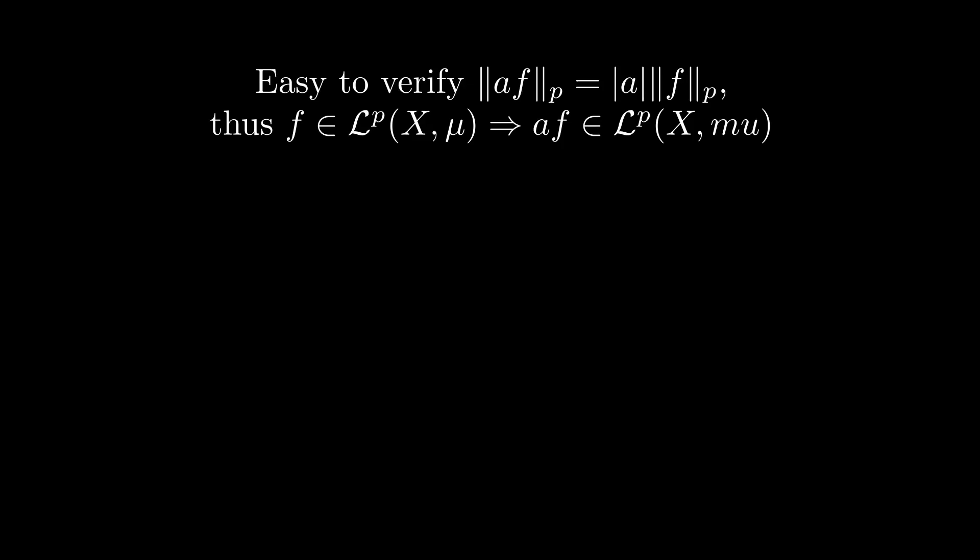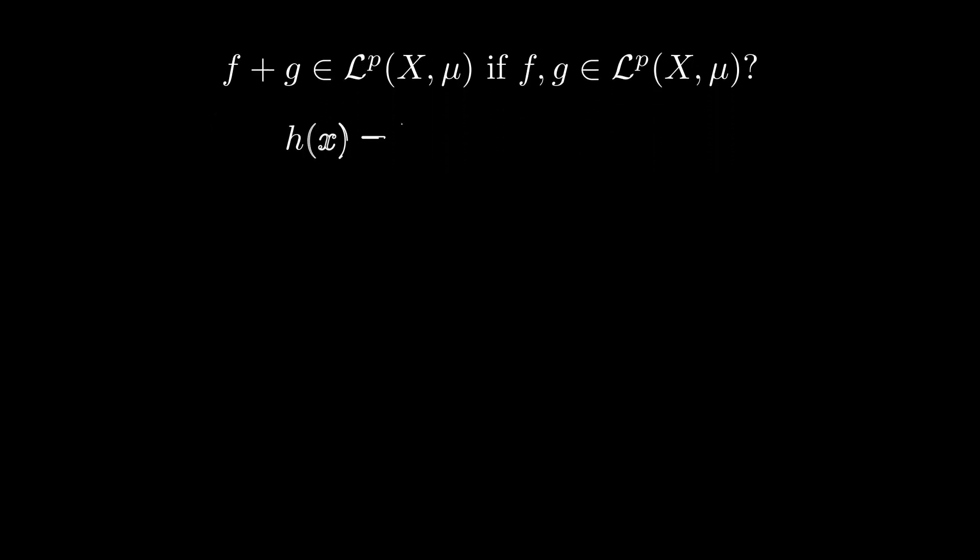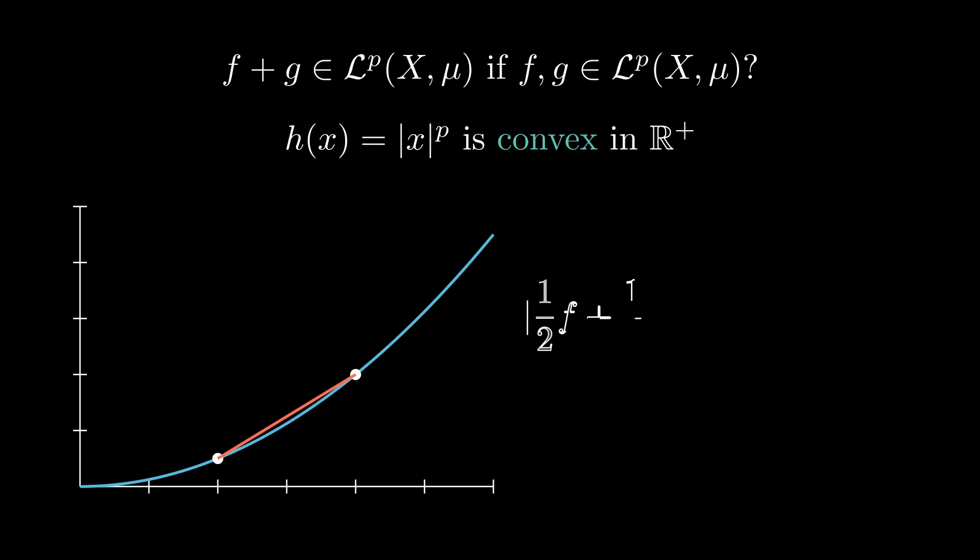To verify that we can add two functions, we argue by the convexity of the function h(x) = |x|^p on the positive real numbers. Convexity means that whenever we draw a secant of two points of the graph, the secant is always above the graph. Using the convexity of h, we obtain an upper bound for the absolute value of f plus g to the p-th power. After integrating this, we see that the p-norm of f plus g is finite if the p-norm of f is finite and the p-norm of g is finite.